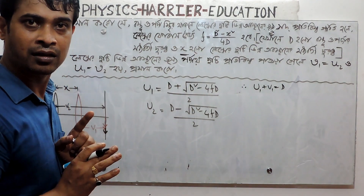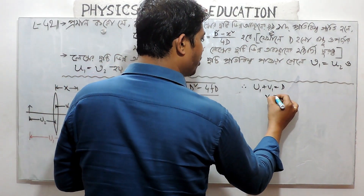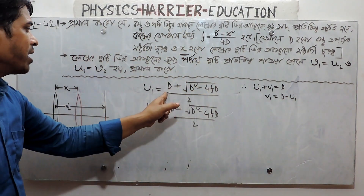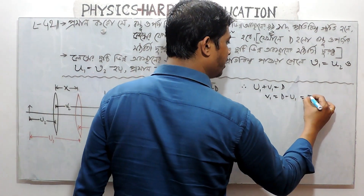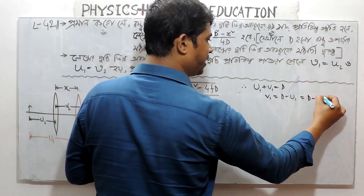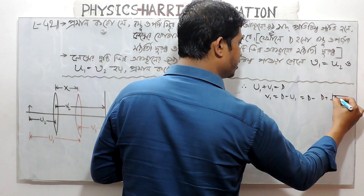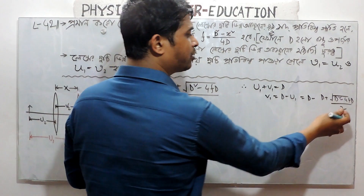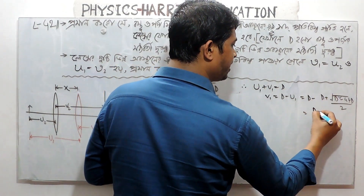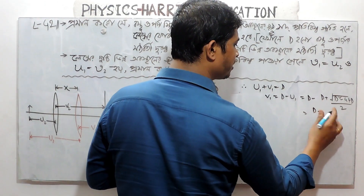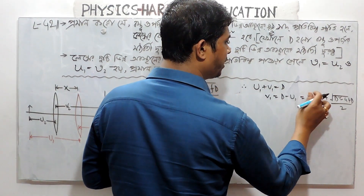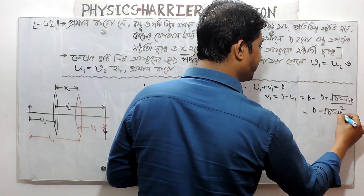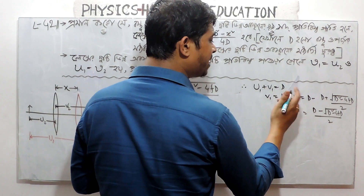It is going to be V1 equal to d minus u1. We are 50 bridge. So, you want a value? So, d minus d plus root over d square minus 4fd by 2. So, d plus 1. 2d minus d plus minus root over d square minus 4fd by 2. So v2, we are v1.